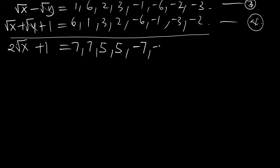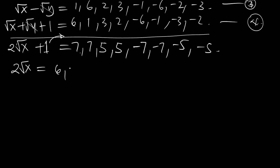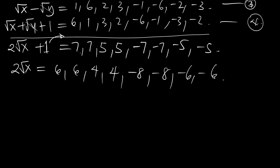This will give you minus 7, minus 7, minus 5, minus 5. Now moving the plus 1 to the other side, it becomes minus 1. So you now have 2 times the square root of x. Moving this, you have 7 minus 1 which is 6, this one is 6. Then 5 minus 1 is 4, 5 minus 1 is 4. And minus 8, minus 8, minus 6, minus 6. Divide all through by 2.